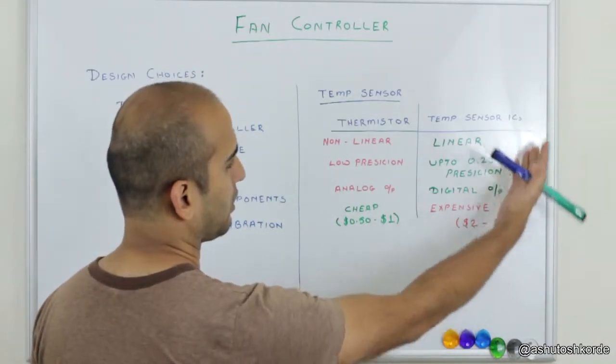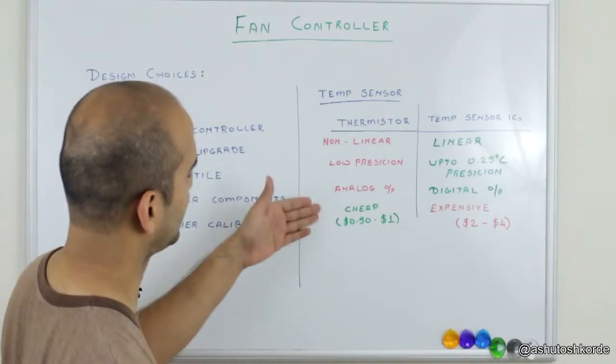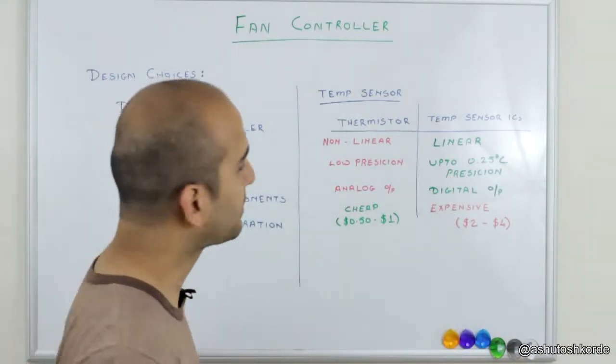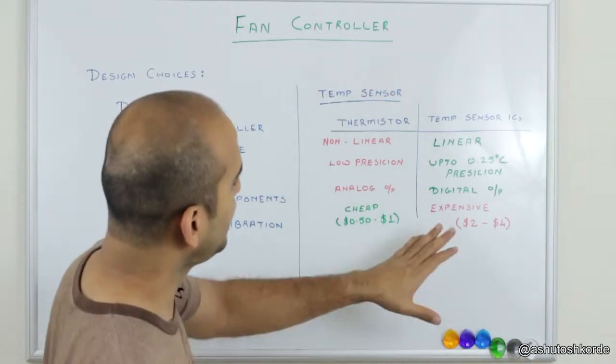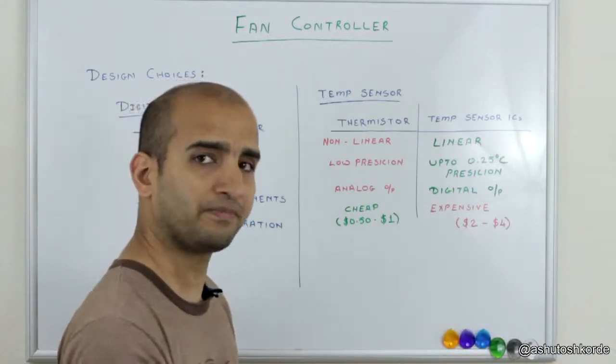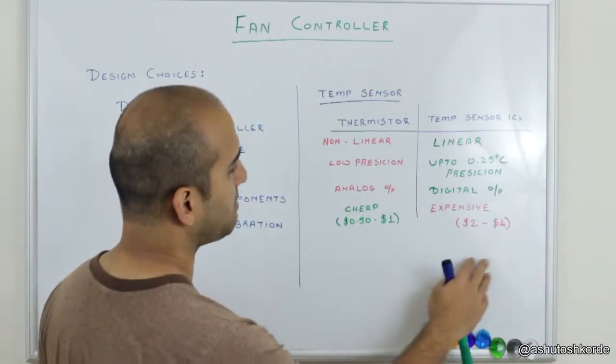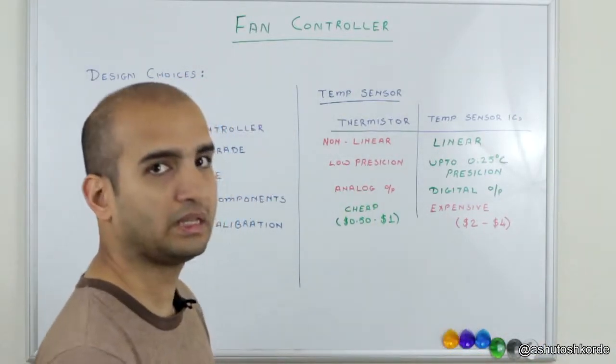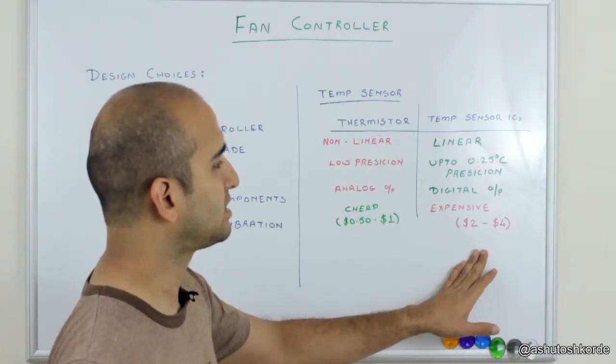from about two to four dollars each. Now you might think yes, temperature sensor makes sense in this scenario because it's all got all these green here whereas this is all red. But if you think about it for a minute, do we really need all of these advantages of the sensor ICs? Now mind you, one thing I didn't mention here is the interfacing between the microcontroller and temperature sensor IC